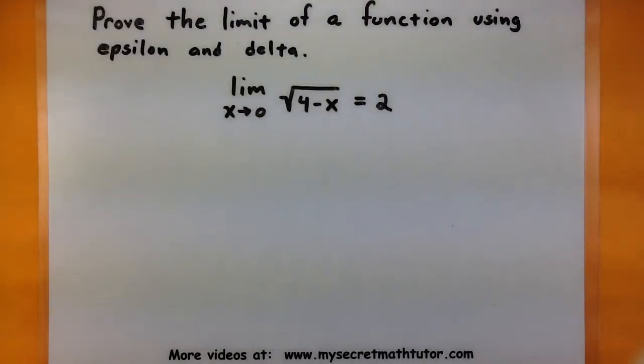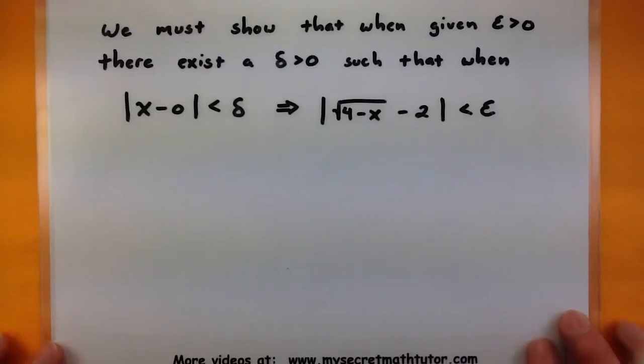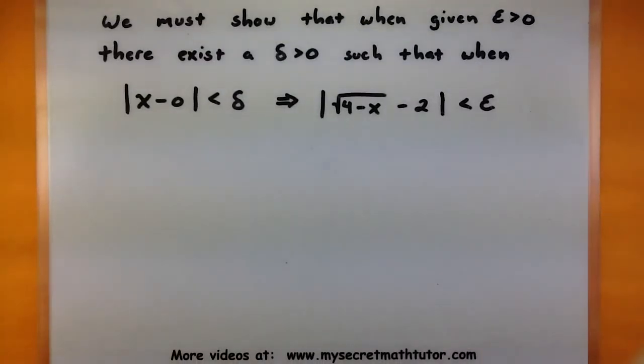And to prove this using epsilon and delta, we basically have to show the following. We must show that when given an epsilon greater than 0, there exists a delta greater than 0, such that whenever x minus 0 is less than delta, it forces the absolute value of the square root of 4 minus x minus 2 to be less than epsilon.